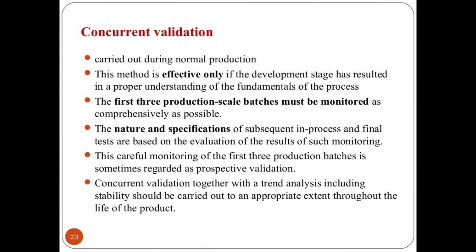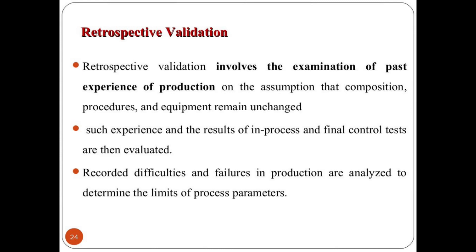This careful monitoring of the first three production batches is sometimes regarded as prospective validation. Concurrent validation, together with trend analysis including stability, should be carried out throughout the life of the product. Retrospective validation involves the examination of past experience of production on the assumption that compositions, procedures, and equipment remain unchanged. Such experience and the results of in-process and final control tests are evaluated; difficulties and failures in production are analyzed to determine the limits of process parameters.